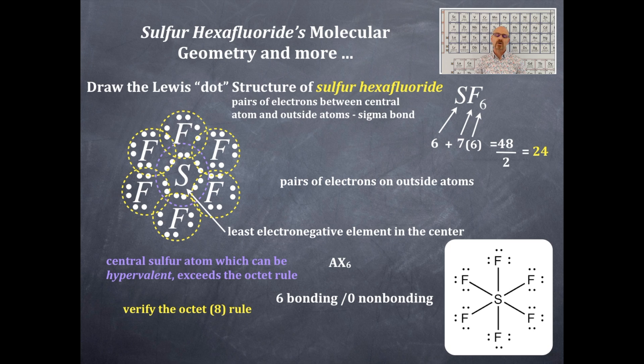Now from either the AX6 or the six bonding and zero non-bonding you need to memorize the name of the shape and that name of that shape is octahedral. Okay if it is octahedral then what are the bond angles? Those bond angles are of course that's right 90 degrees.